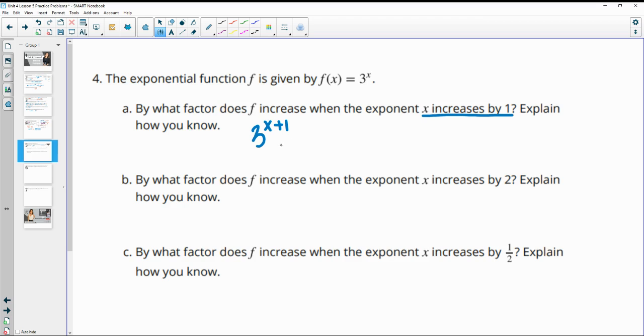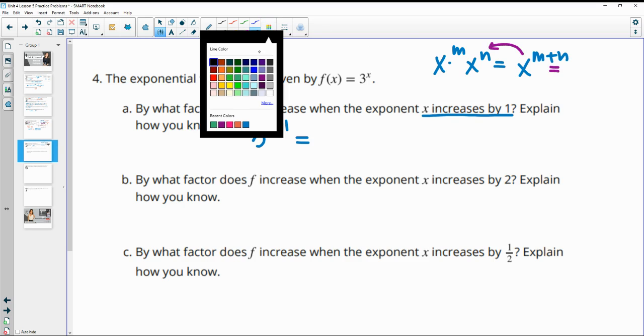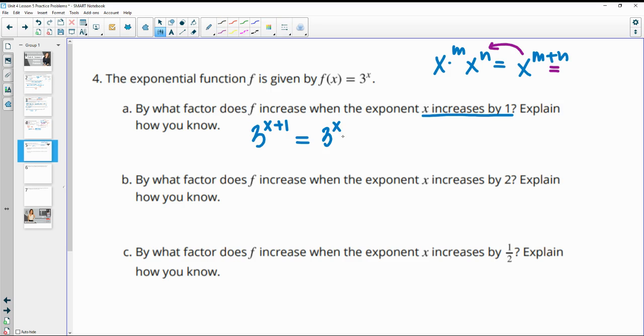And so you can use this rule. We're able to add exponents when we're multiplying same bases. So 3^(x+1) is really the same as 3^x times 3^1.